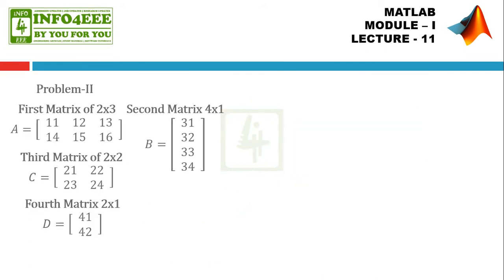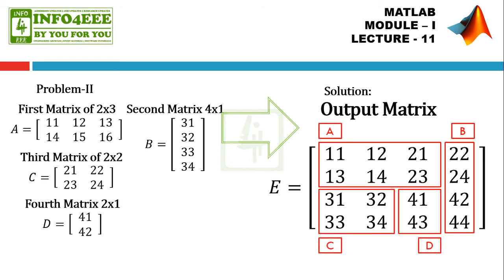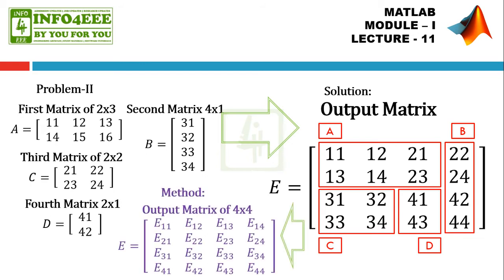In the second problem, suppose we have four matrices in which the first one is of 2 by 3 order, the second matrix is of 4 by 1 order, the third matrix is of 2 by 2 order, and the fourth matrix is of 2 by 1 order. All four matrices are not identical in size. We can merge these four matrices into a 4 by 4 order matrix. We achieve this by calling each element individually and placing them — A is placed here, B is placed here, C is placed here, and D is placed here.